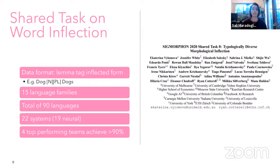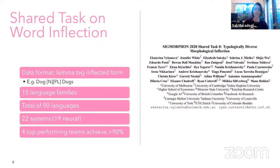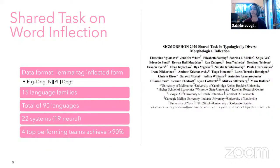This task is obviously done very well. The main research in this vein is the SIGMORPHON shared tasks — in particular the SIGMORPHON 2020 shared task. The data format has a lemma with a tag and an inflected form; for example 'dog', noun, plural gives 'dogs'. In last year's shared task there were basically 15 language families, a total of 90 languages. Out of the 22 systems submitted, 19 were neural. The four top-performing teams that achieved over 90% were neural networks.